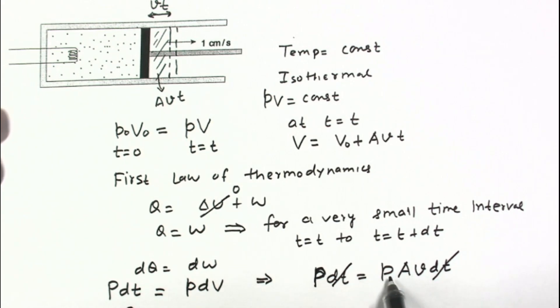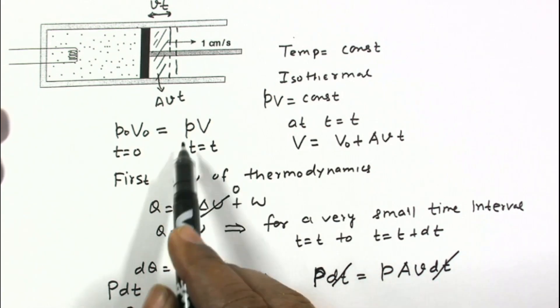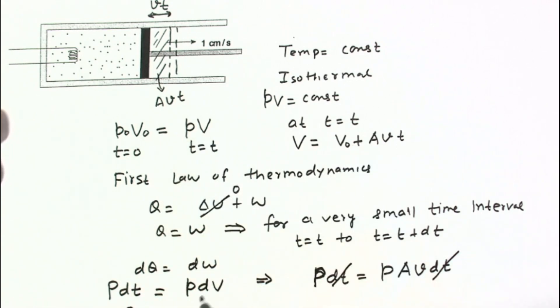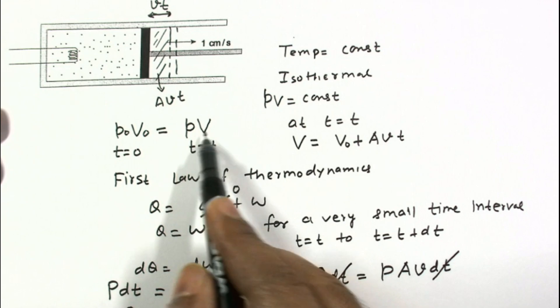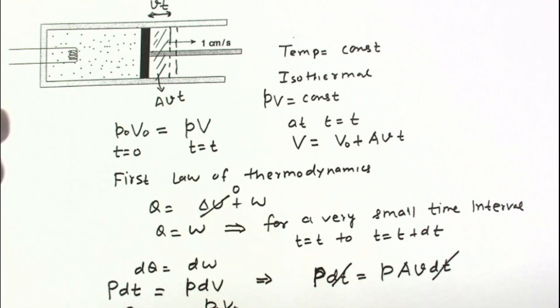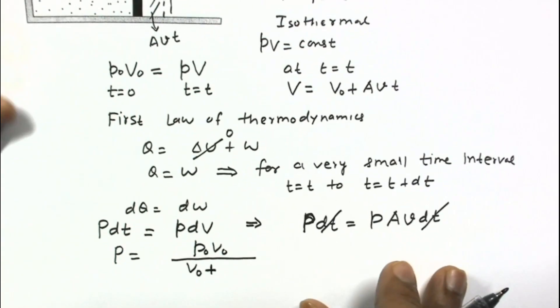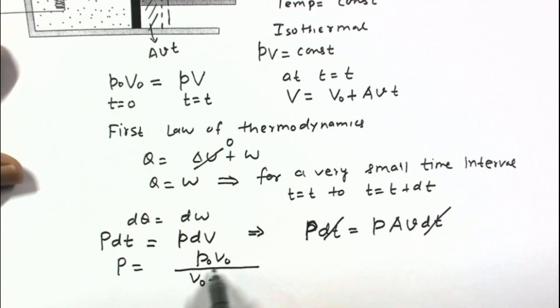Now we have to put the value of this pressure and this pressure will be P0 V0 divided by this V, and this V will be V0 plus AV into T.